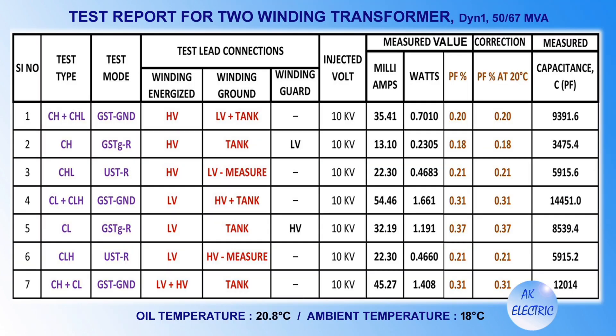This is the test report for a 2-winding transformer — a 67 MVA transformer test report. One can observe that this test was made at an oil temperature of 20.8 degrees Celsius and ambient temperature of 18 degrees Celsius. In the next slides we will analyze the test report part by part.